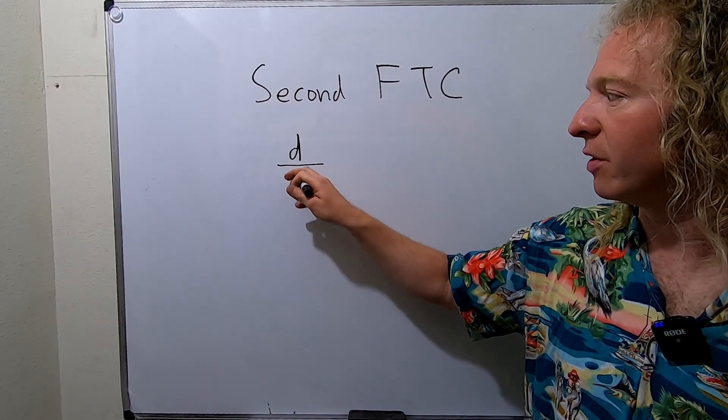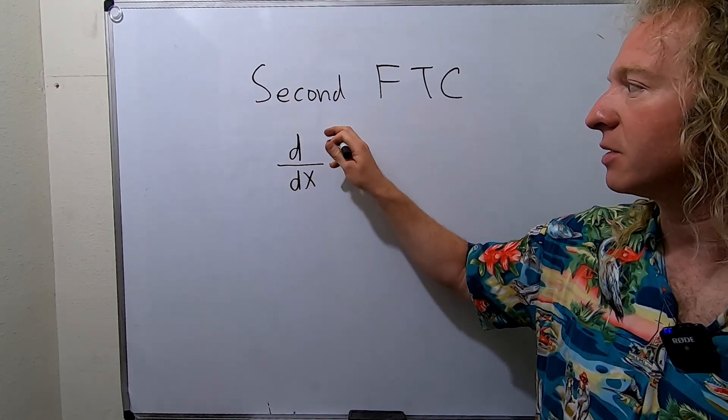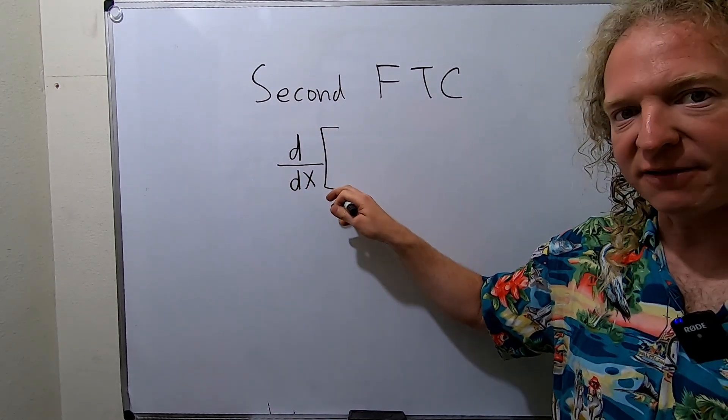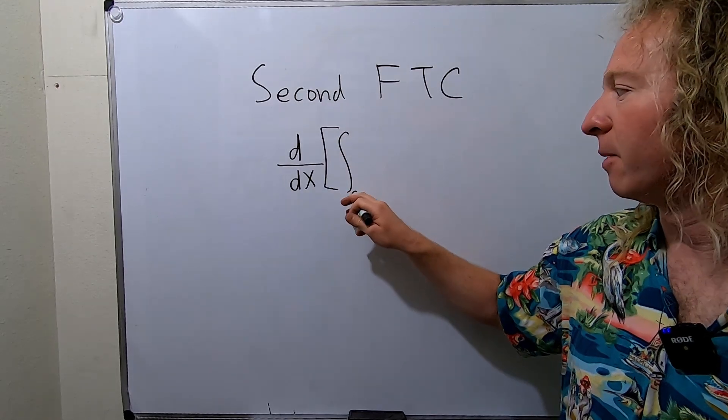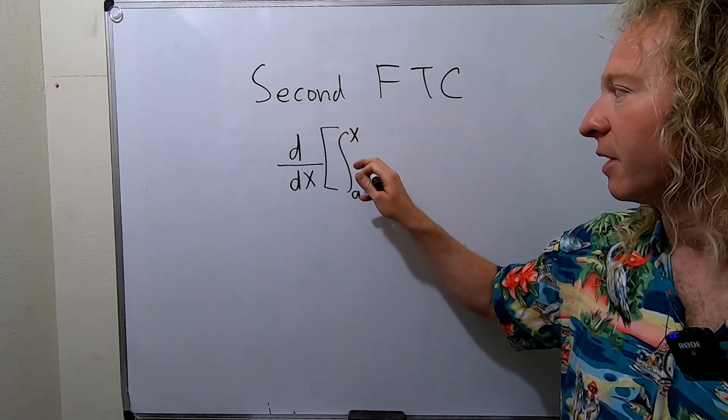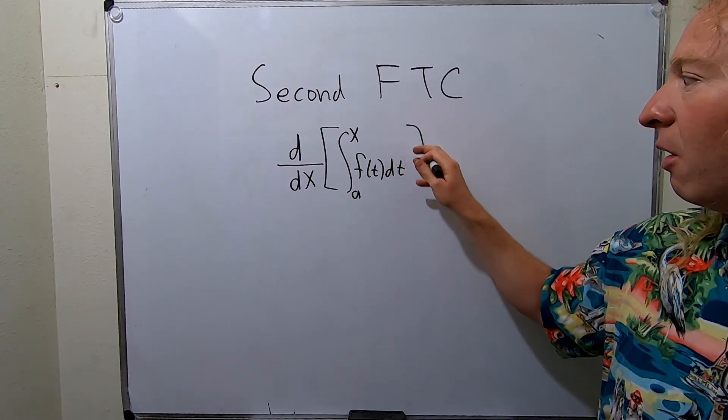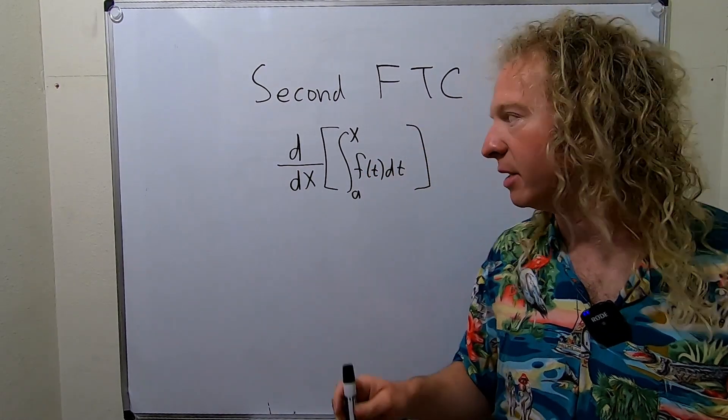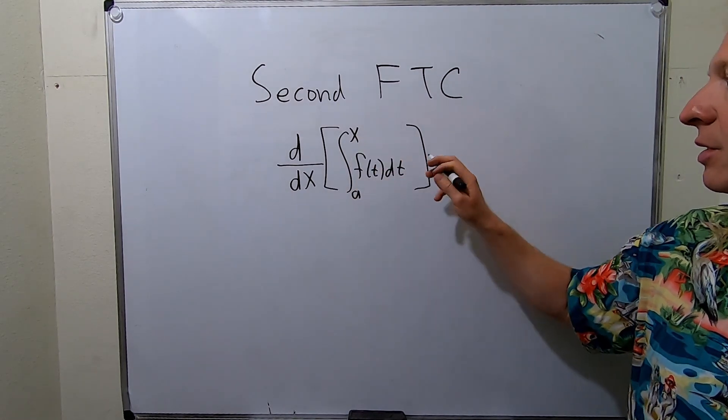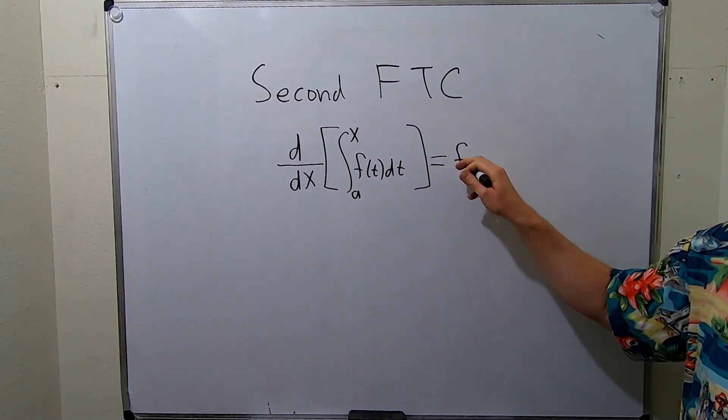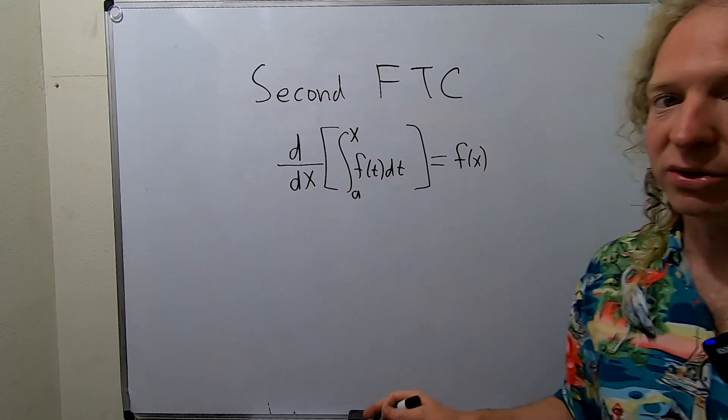So if you take the derivative with respect to x of the definite integral from a to x of f of t dt, all you have to do is you just put the x where the t is. So this is just f of x. That's all you do.